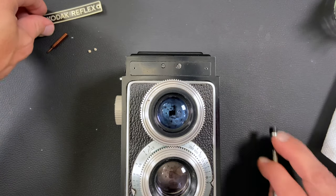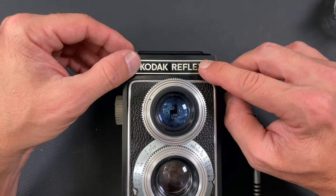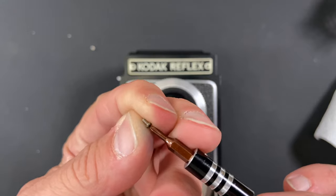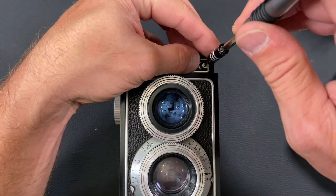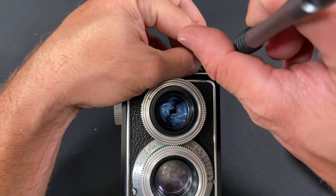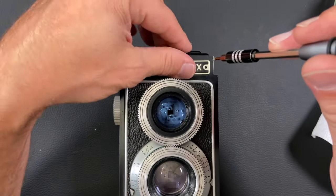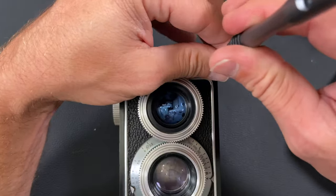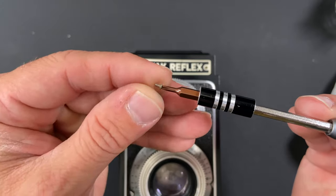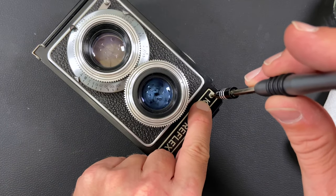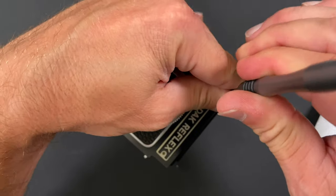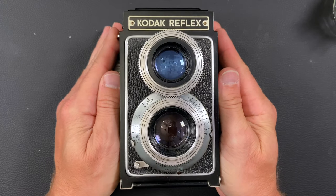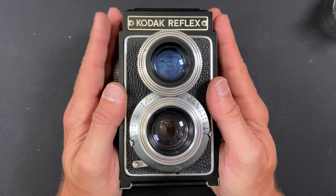All right, and we are going to get our Kodak Reflex badge. And these guys are tiny little Phillips head screws. And that's it. That's the Kodak Reflex 620 film camera from 1946 to 1949.